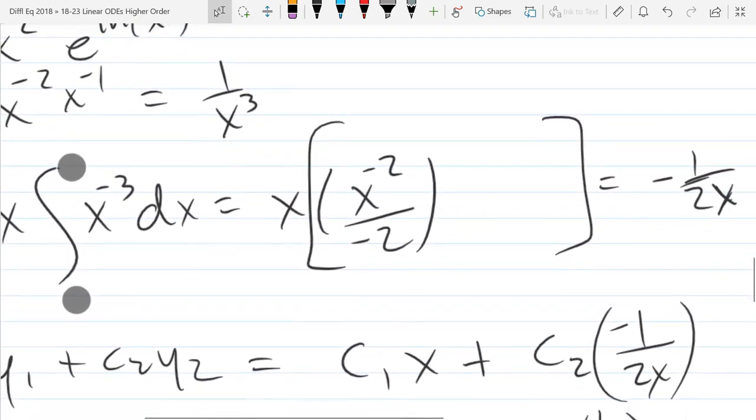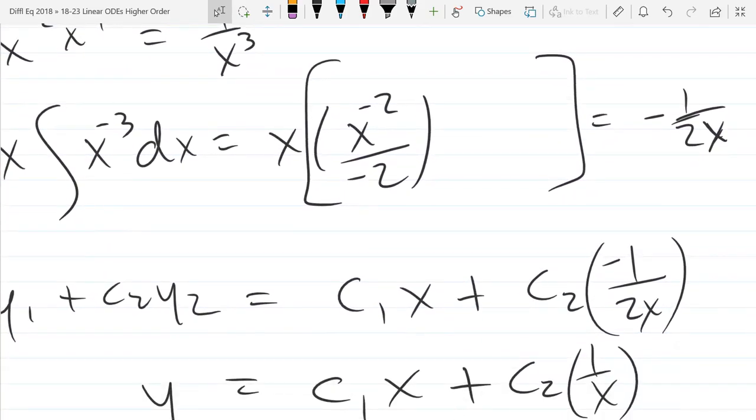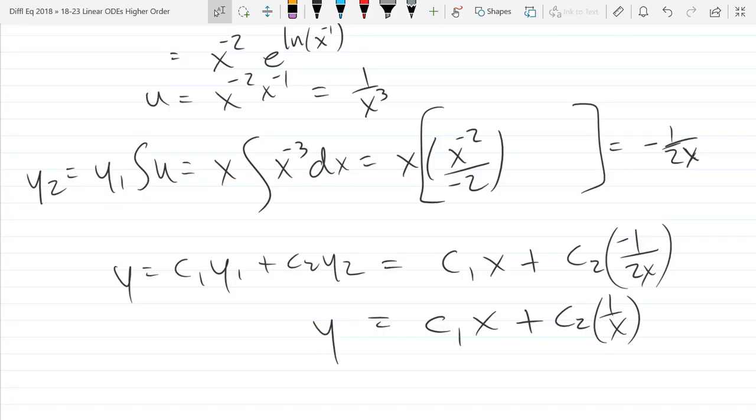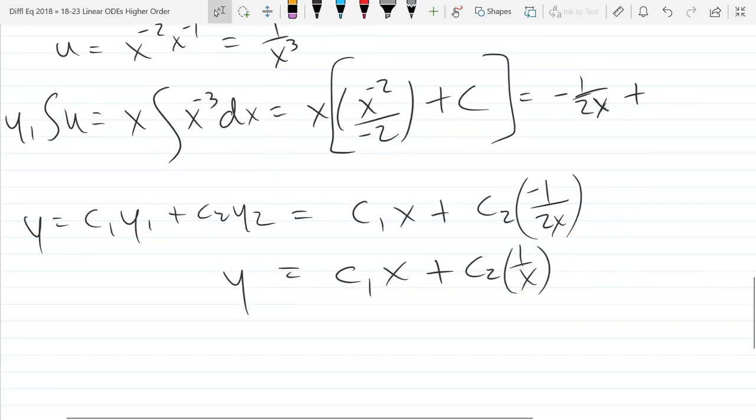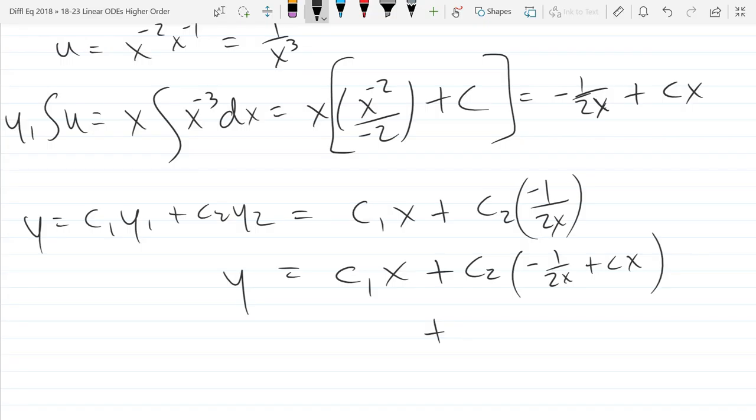From the integral of x to the negative three, that created a constant that's absorbed into the C1 X term? I add 1 to the power, divide by negative 2, and then reduced, so we get that thing on the right. Negative 1 over 2X is Y2. Where did the constant term go? I had a plus C up here before. If I let that survive, it turns into CX.